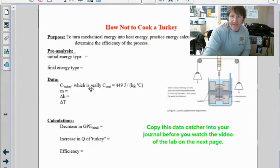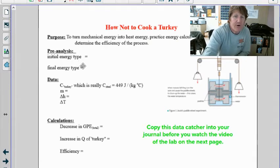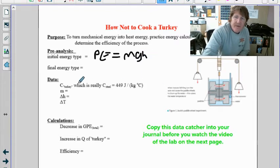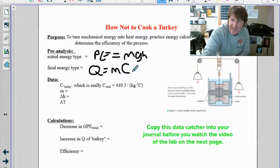So we're going to look over here. We have the pre-analysis question. The initial energy type is going to be our gravitational potential energy. We're going to have to bear with my chicken scratch here, so we're going to have our potential energy gravitational is going to be equal to mgh. And then our final energy type is going to be our heat, so we're going to have Q equals mc delta T.